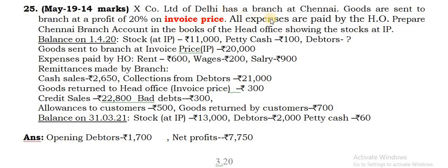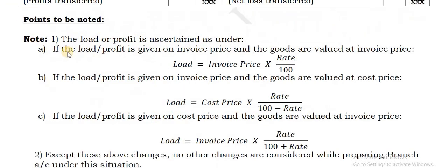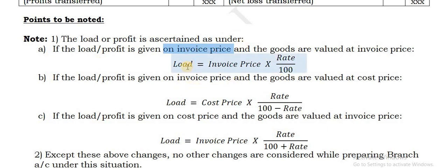Ex-company limited has a branch at Chennai. Goods are sent to branch at a profit of 20% on invoice price. Note that 20% is given not on cost but on invoice price. When it is given on invoice price, the load is calculated on the invoice price. Load is equal to invoice price into rate by 100. That is all.